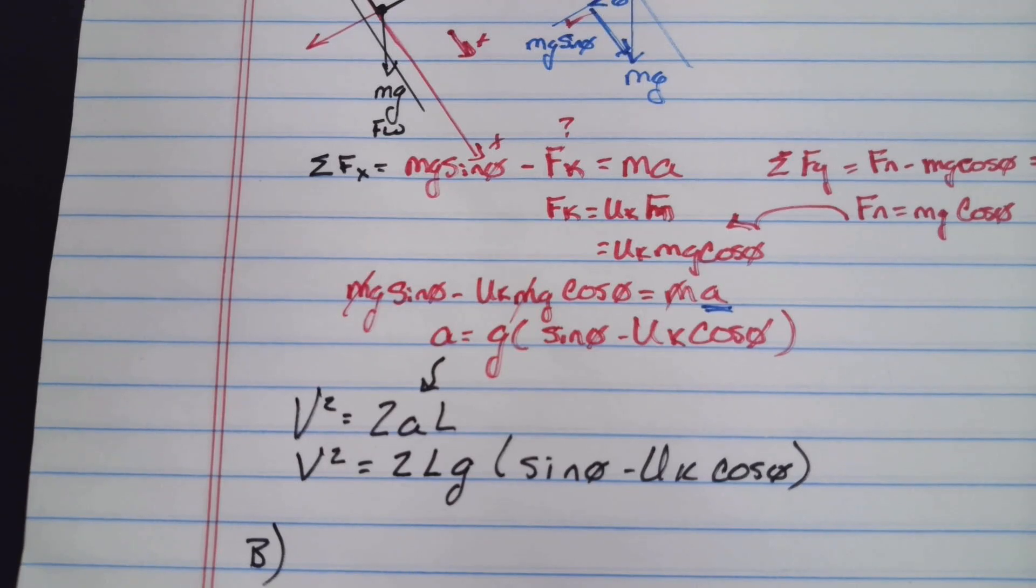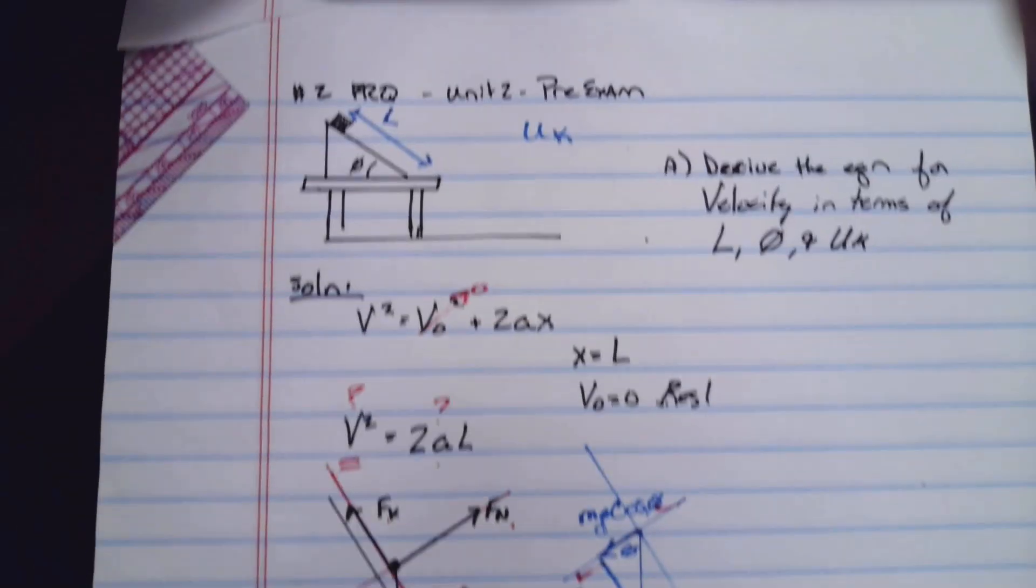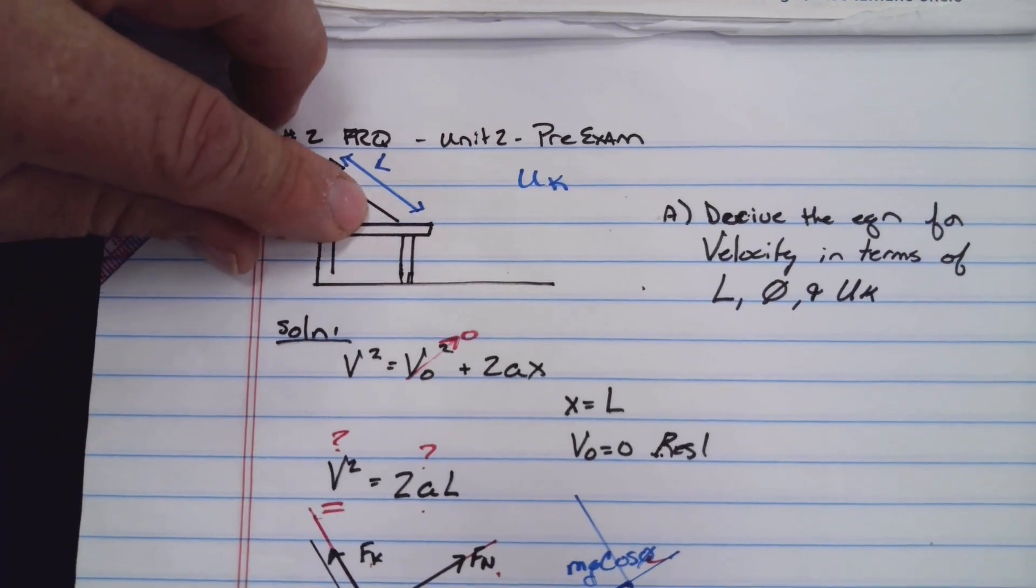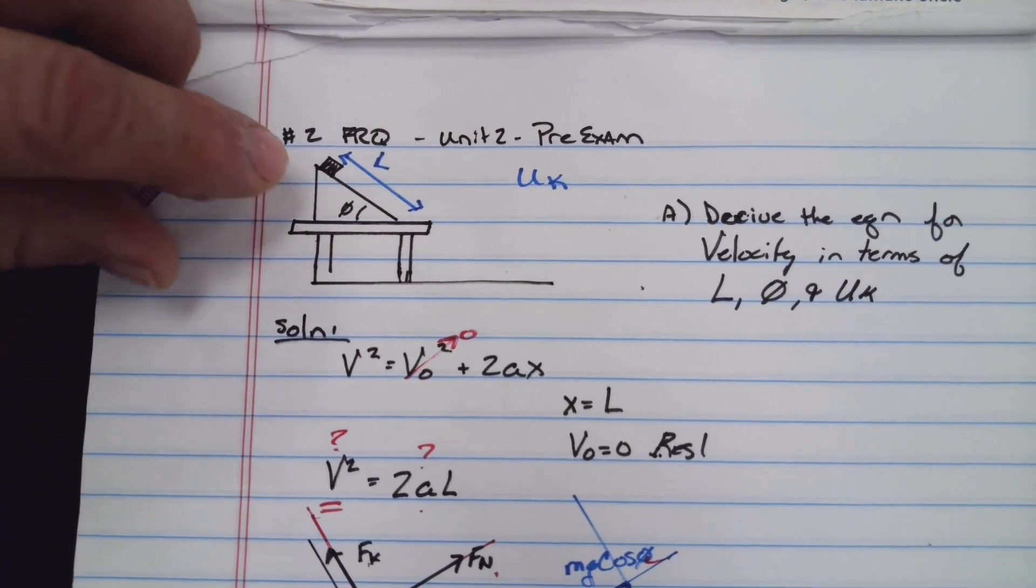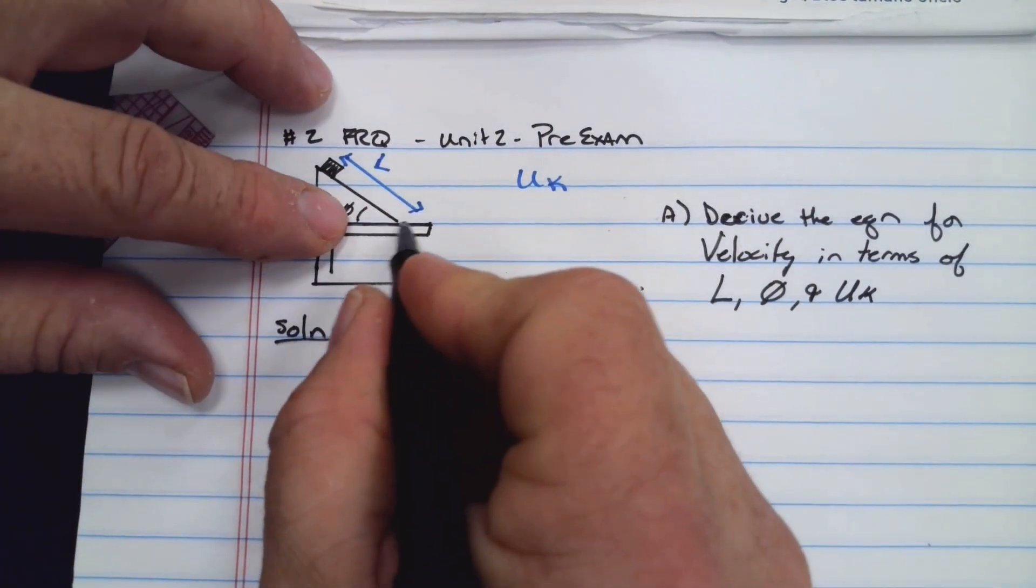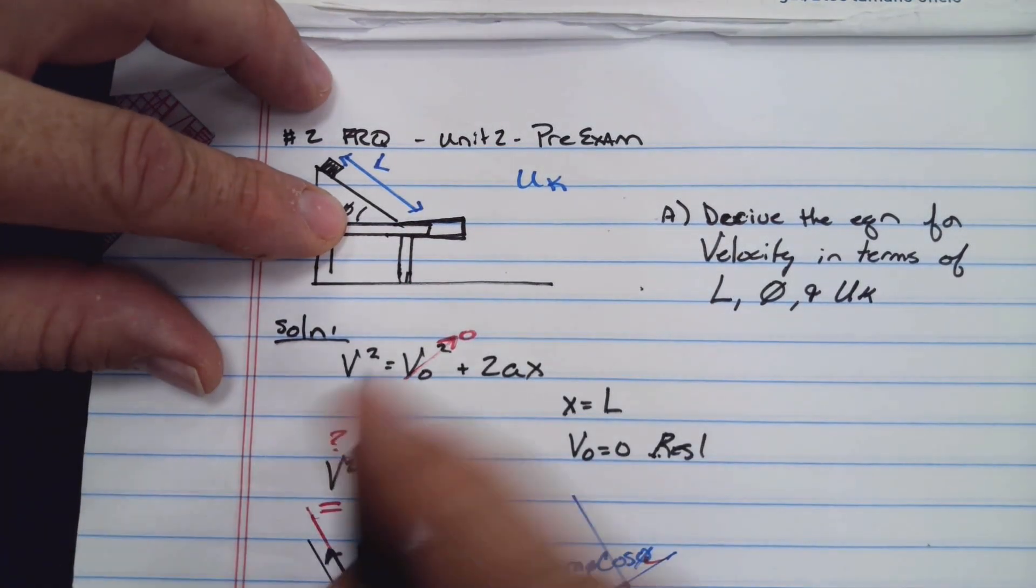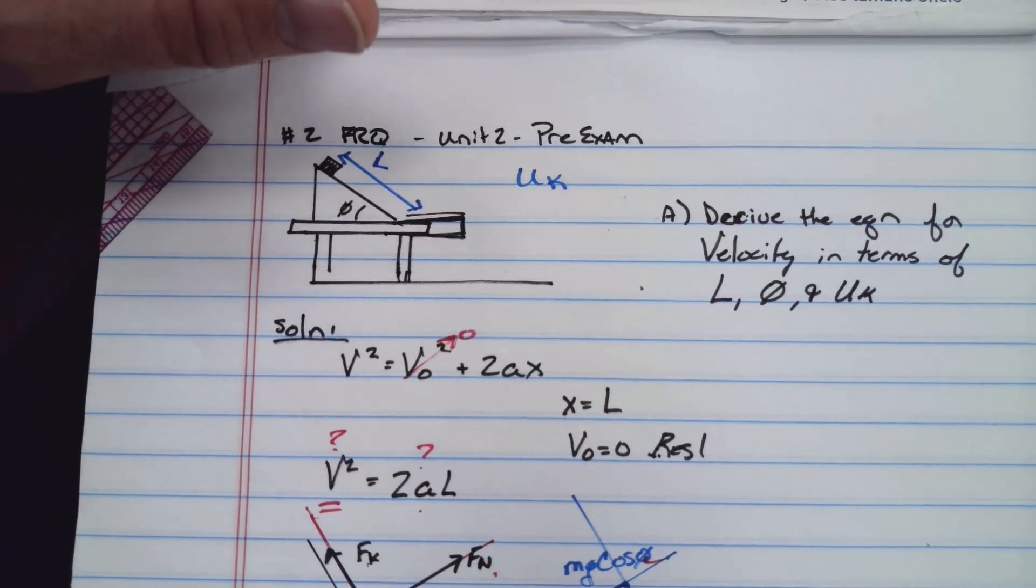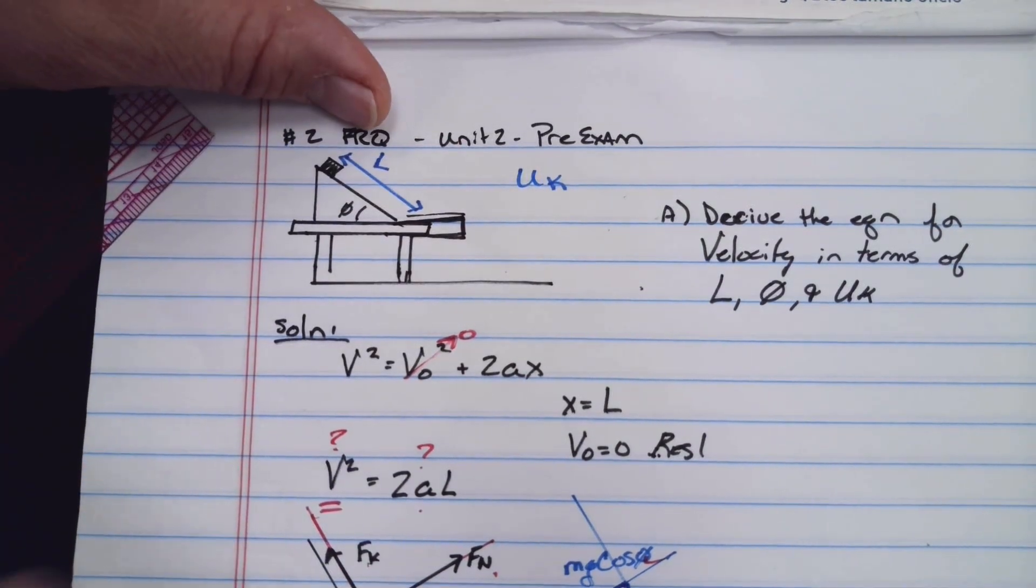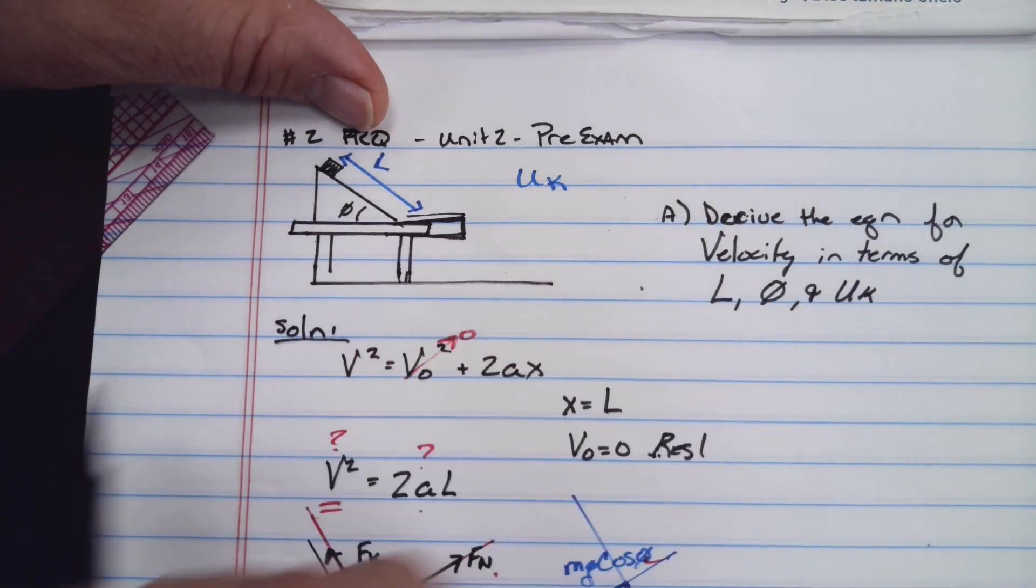Remember, we have v² = 2aL. Let's bring that in. v² now equals 2Lg(sinθ - μk cosθ). We can rewrite that by taking the square root or just leave it like that. The next thing on part B asks if the incline plane is pushed farther back.